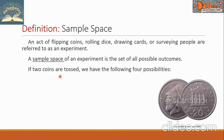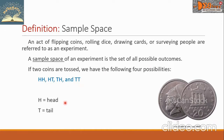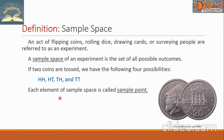If two coins are tossed, we have the following four possibilities: HH, HT, TH, and TT, where H means head and T means tail. Each element of the sample space is called a sample point.